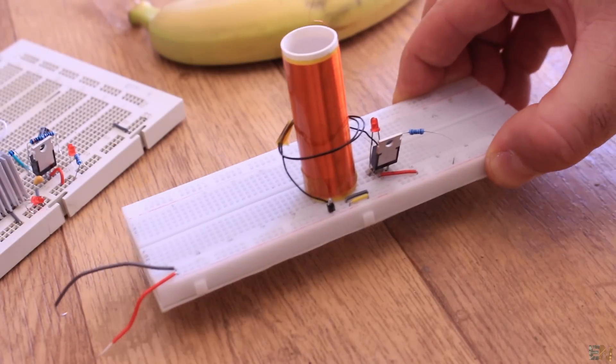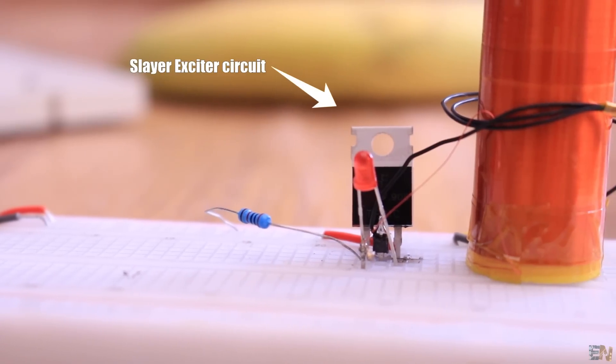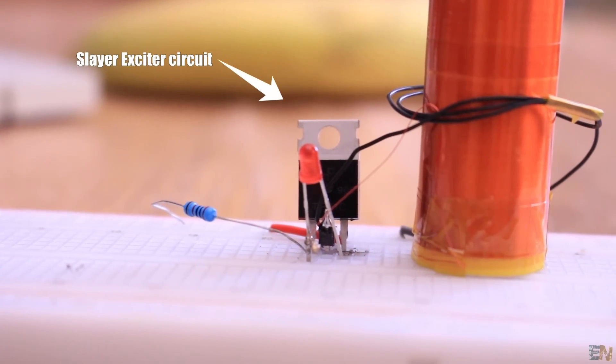What's up my friends, welcome back. Here I have mounted the most simple Tesla coil circuit. Actually, this is called a Slayer exciter circuit.